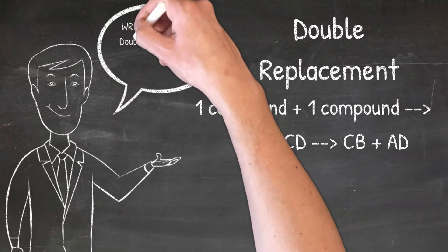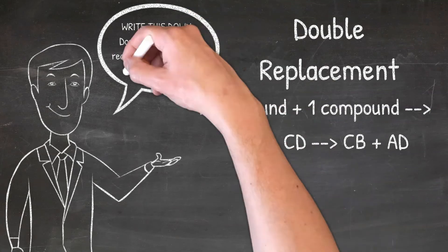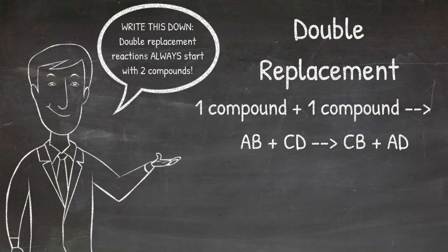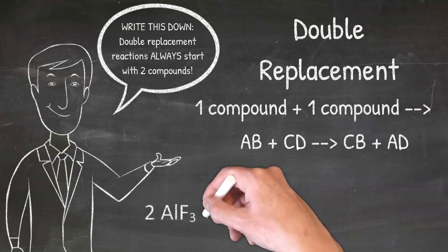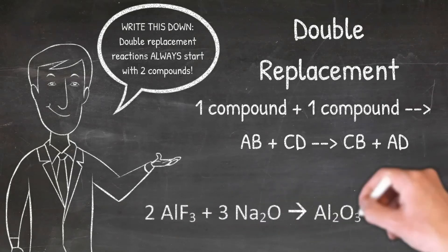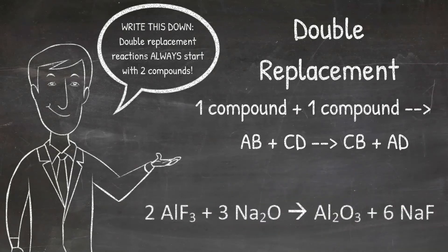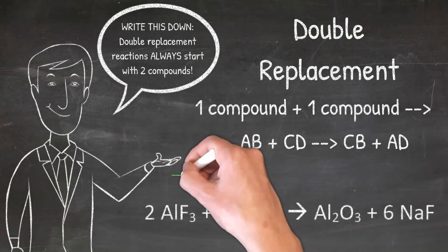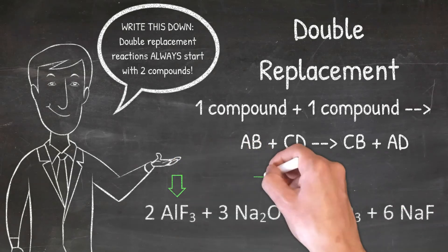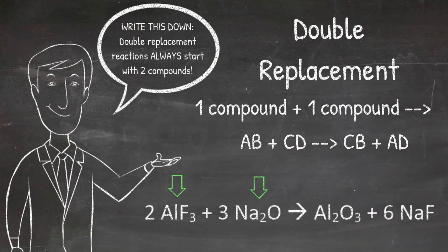The important thing to remember about double replacement reactions is that they start with one ionic compound plus another ionic compound. You can see from the example that the reaction starts with two different ionic compounds AlF3 and Na2O. Whenever you have a reaction that starts with two different ionic compounds, you will have a double replacement reaction.